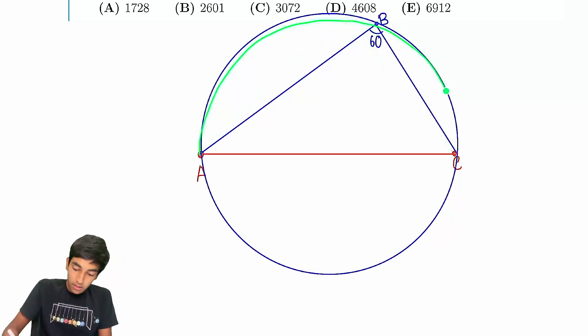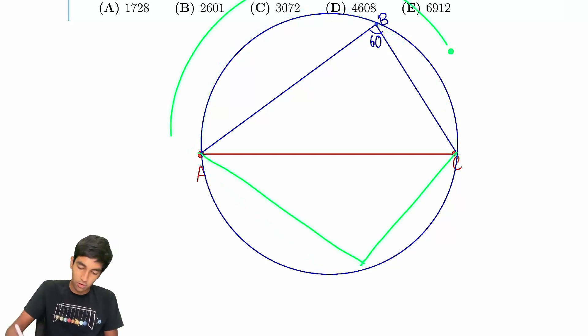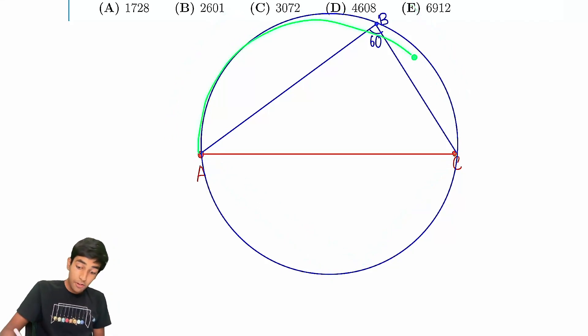So any point along this circle will give us a 60 degree, or any point from, sorry, from here to here only, because otherwise it becomes 120 if you go here, becomes 120, because now this arc is 240. So any point from here to here can work.